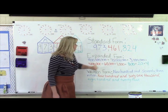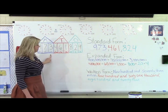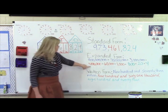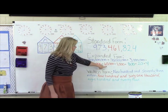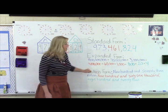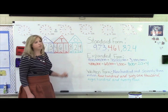70 million, plus 3 million, plus 400,000, 60,000, 1,800, plus 20, plus 4.